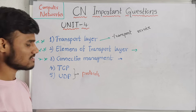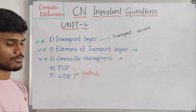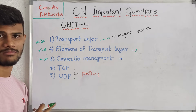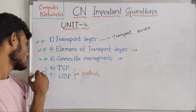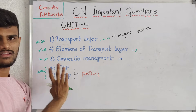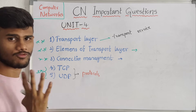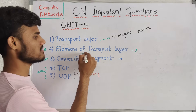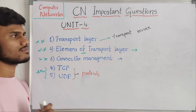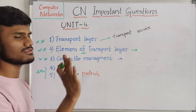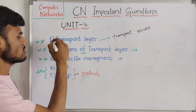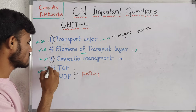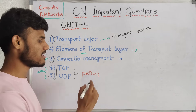This is all about connection management. Then next we have the very very important question — TCP and UDP. TCP is nothing but Transmission Control Protocol. UDP is nothing but User Datagram Protocol. These are the very very important questions. In this unit we have only four topics, and those four topics must appear in the question paper. You must learn the main difference between TCP and UDP.